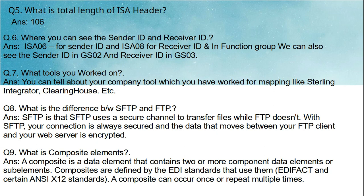The next question is: where can you see the sender ID and receiver ID? In the interchange header, ISA06 contains the sender ID and ISA08 contains the receiver ID. If you want to see the sender ID and receiver ID in the functional group, you can find the sender ID in GS02 and the receiver ID in GS03.